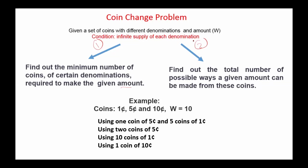The second type of the problem is to find the total number of possible ways a given amount can be made from these coins. For example, with coins of 1 cent, 5 cents, and 10 cents and amount 10, we can make the sum using: one 5-cent and five 1-cent coins, two 5-cent coins, ten 1-cent coins, or one 10-cent coin. For the first type, the minimum number of coins is one. For the second type, the number of ways is four.